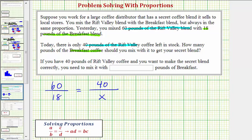Now that we have a proportion, we can cross multiply and solve for x. When we cross multiply, we'll have 60 times x must equal 18 times 40. So 60x equals 18 times 40. 18 times 40 is equal to 720, so we have 60x equals 720.